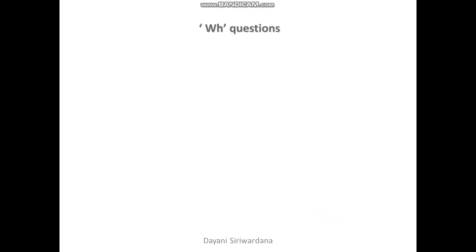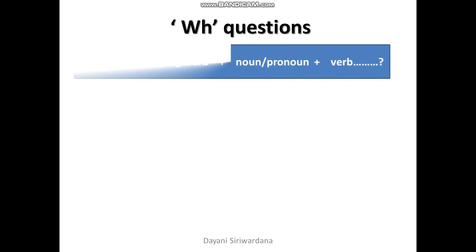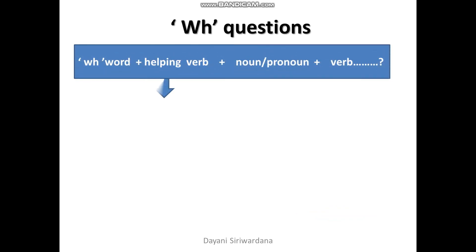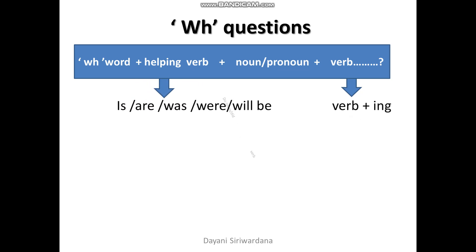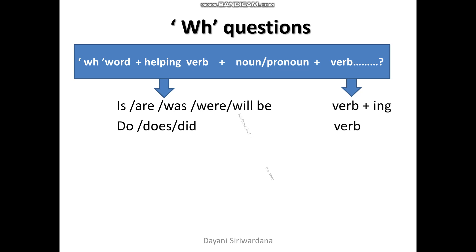How can we form WH questions? A WH question starts with a WH word. A helping verb follows the WH word. After that you have to use the noun or a pronoun, then the verb and the rest of the question.